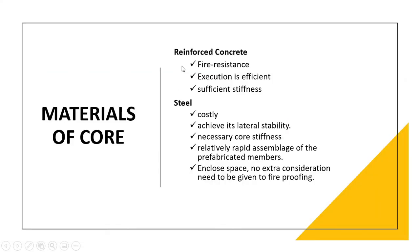Materials of the core: we use reinforced concrete, which is good for fire resistance, efficient in execution, and provides sufficient stiffness. Alternatively, we use steel, which is costly but achieves lateral stability and is necessary for core stiffness. A steel core is quicker to assemble due to prefabricated members and does not require additional fireproofing consideration for that area.